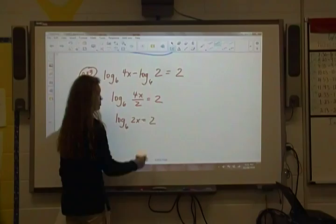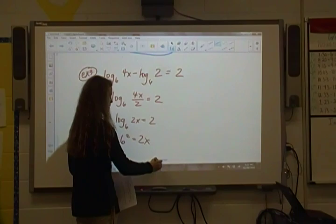Now we'll switch forms. 6 squared is equal to 2x. 36 equals 2x. So x is 18.